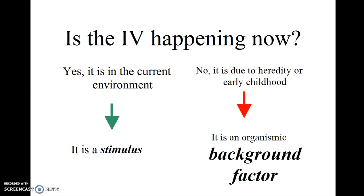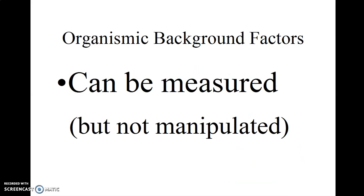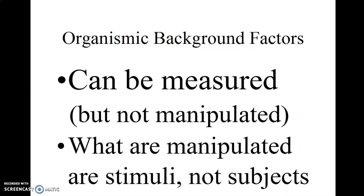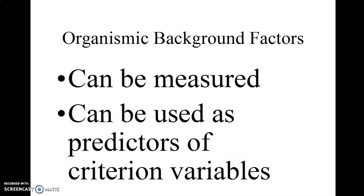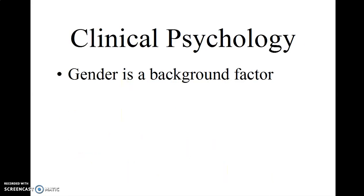Now, is the independent variable happening now? If it is not, is it due to heredity or early childhood? If so, it is an organismic background factor. It can be measured, but not manipulated. Now, remember, what are manipulated are the stimuli, not the subjects. Organismic background factors can be measured, and they can be used as predictors of criterion variables.